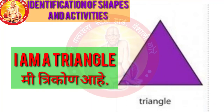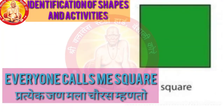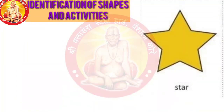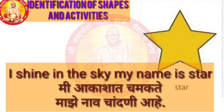I am Triangle — Me Trikund Ahe. Everyone calls me Square — S-Q-U-A-R-E, Square means Chauras. I am a Rectangle — My Shape is Rectangle. I shine in the sky, my name is Star.